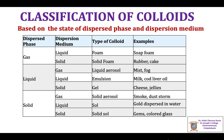When liquid is dispersed in a solid — that is, when the dispersed phase is liquid and the dispersion medium is solid — the type of colloid is called a gel. Examples include cheese, jellies, etc. Liquid aerosol, emulsion, and gel are the three types of colloids in which the dispersed phase is a liquid.